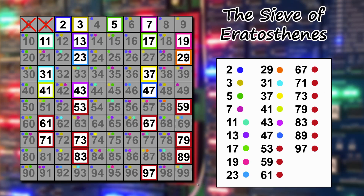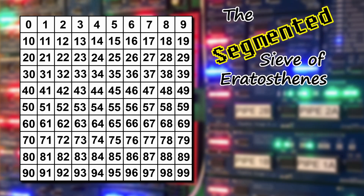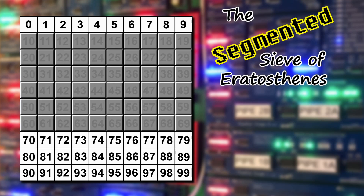Looking back at the primes table: the square root of 100 is 10. If we look at which numbers were involved in crossing out the composite numbers, we can see that the first four primes — everything under 10 — account for the first cross-out of every composite number in the entire table. So rather than needing a table for the entire range, the segment size needs only to be the square root of the upper bound. In our case, the first segment is the first 10 entries.